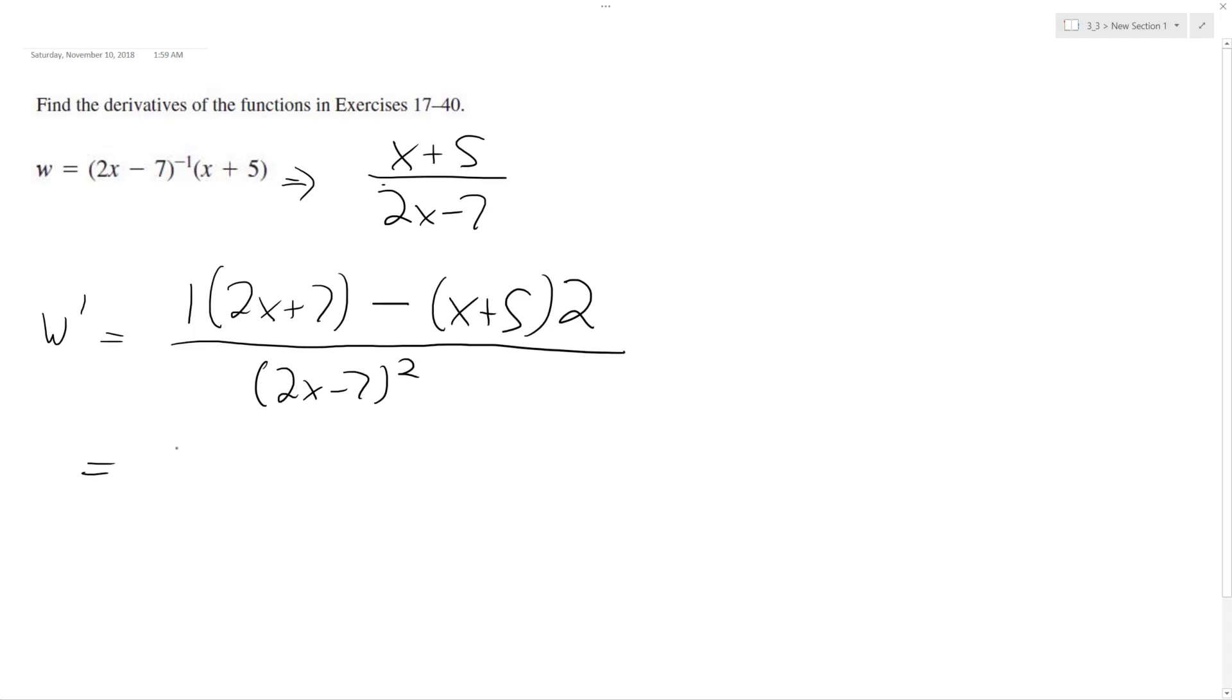Continuing on, I get 2x plus 7 minus 2x minus 10 in the numerator. I'm going to combine these terms. The 2x's cancel out and positive 7 minus 10 equals negative 3.